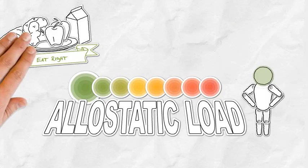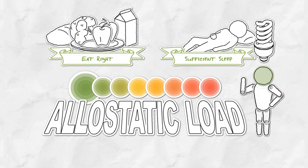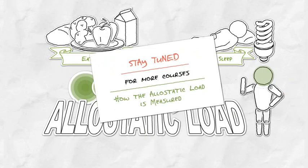There's also a lot that each of us can do to control stress and lower our allostatic load. Simple stuff, like eating right and sleeping enough, and some not-so-simple steps. The first step to wellness is knowledge, and now you have the knowledge of what allostatic load is. In future courses, we'll get into detail about how we can change what we do to lower our load, and how the allostatic load is measured.